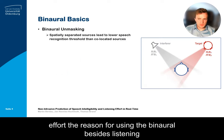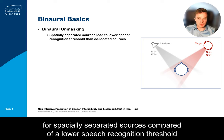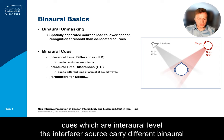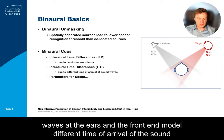The reason for using the binaural front end is to model the effect of binaural masking, which describes the effect of a lower speech recognition threshold for spatially separated sources compared to co-located sources. In a scenario like the one shown, the target source and interferer source carry different binaural cues — interaural level differences due to head shadow effects, and interaural time differences due to different times of arrival of sound waves at the ears — and the front end model utilizes those cues for speech enhancement.